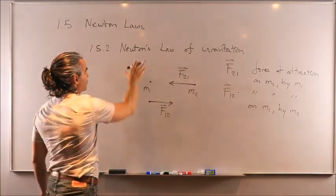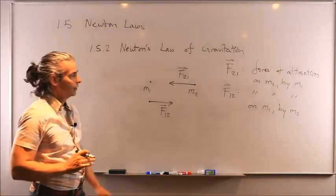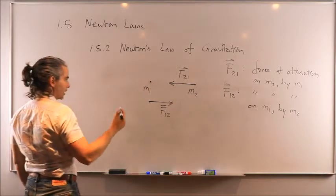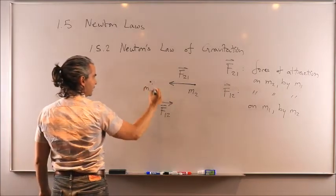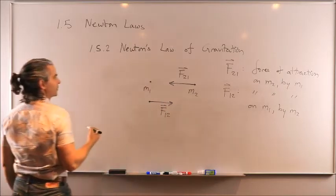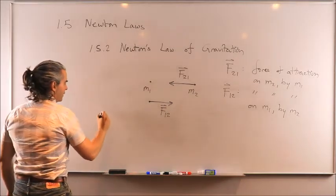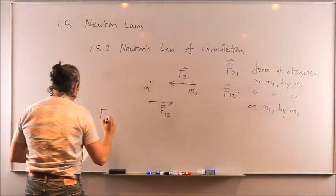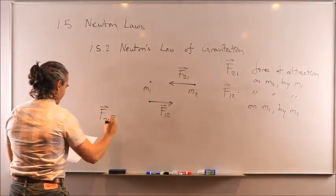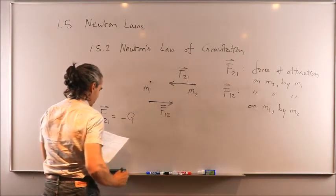Now Newton was able to quantify mathematically those gravitational forces or attraction forces by virtue of the fact that those point masses have finite mass in kilograms. And the way they're quantified is F_21 is equal to minus capital G.